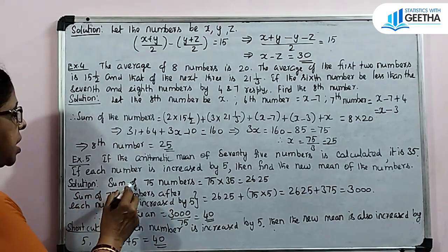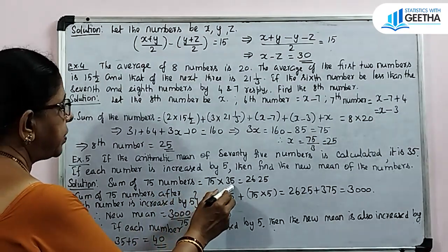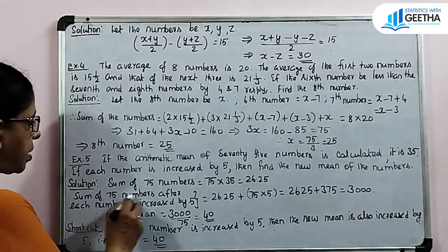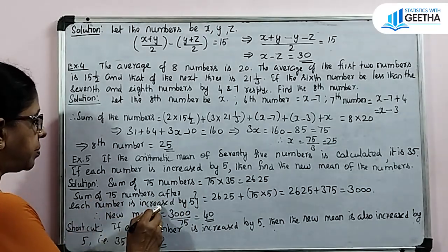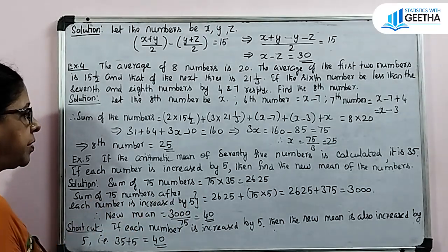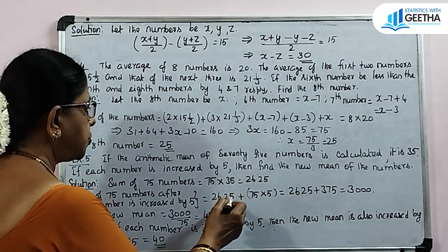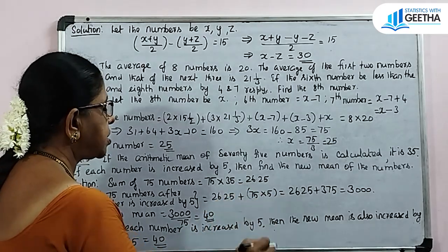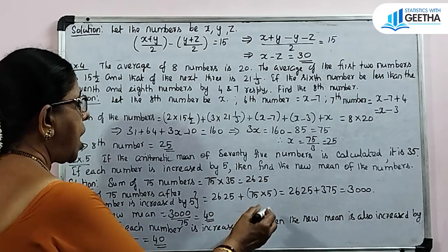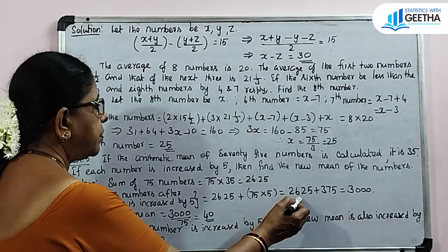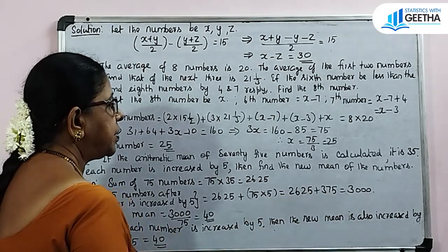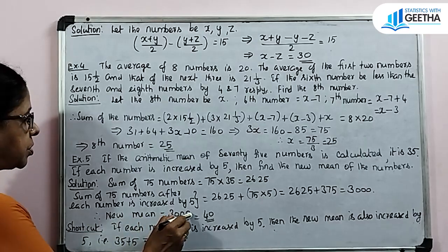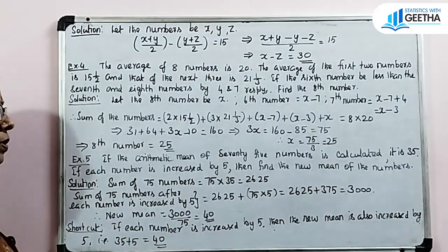Sum of 75 numbers equals 75 into 35, that is 2625. After each number is increased by 5, the new sum equals 2625 plus 75 into 5, which is 2625 plus 375, that is 3000. Therefore, the new arithmetic mean equals 3000 by 75, that is 40.